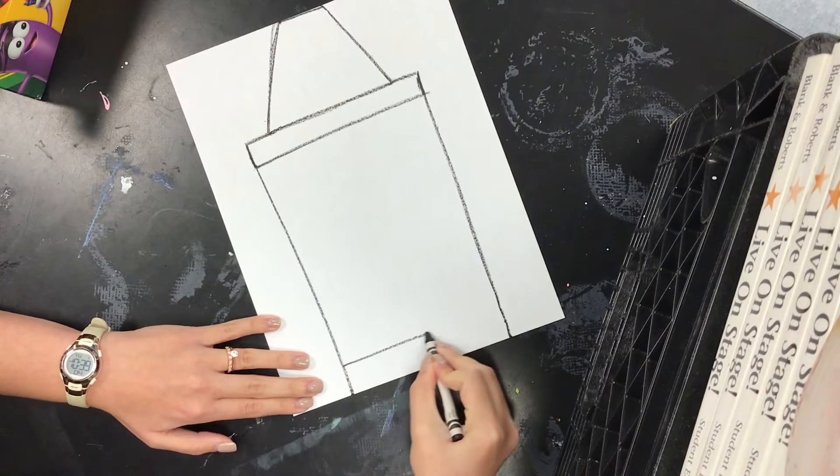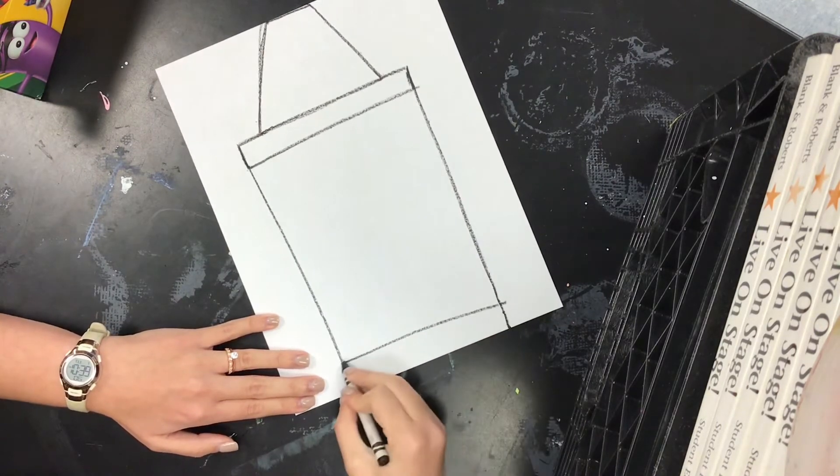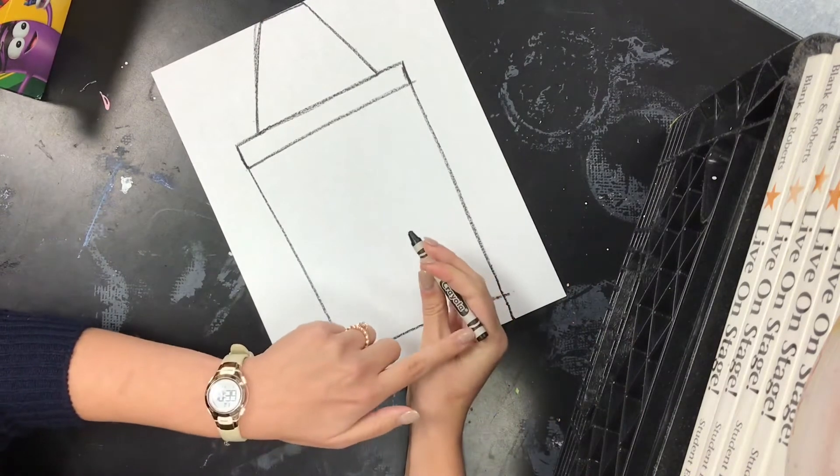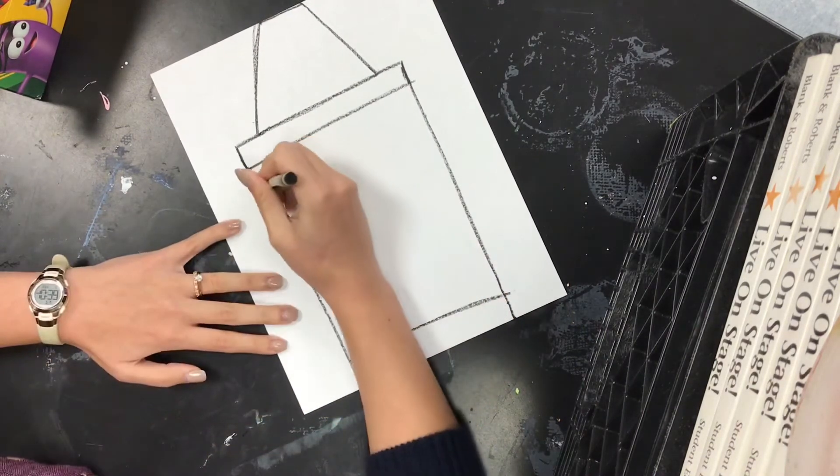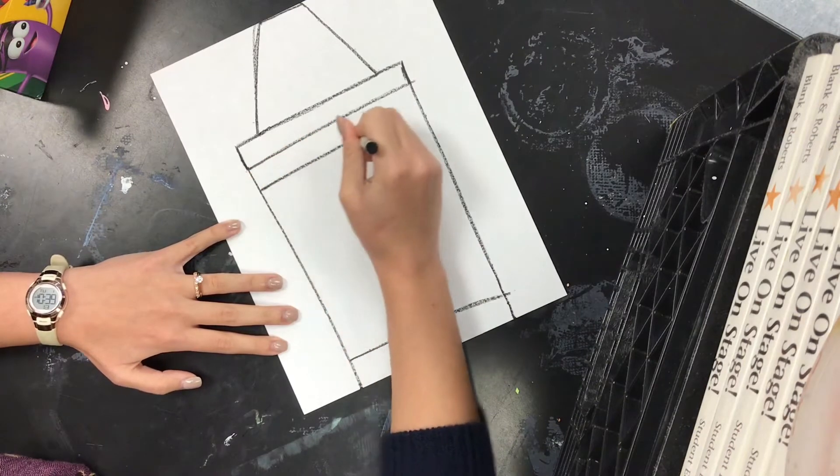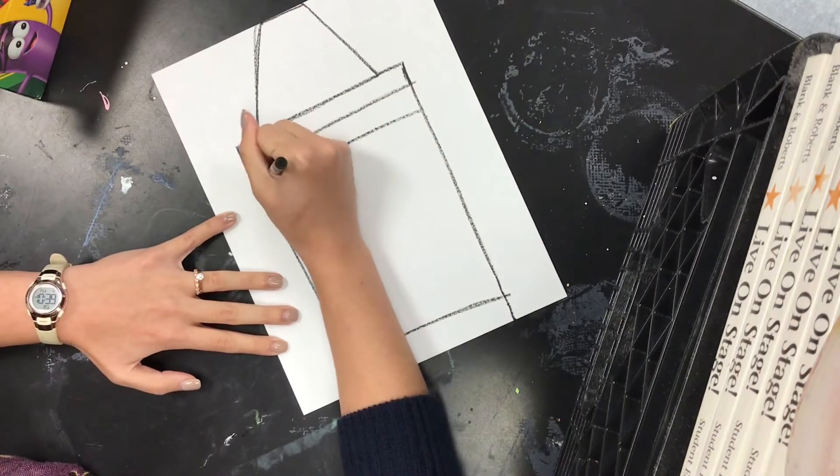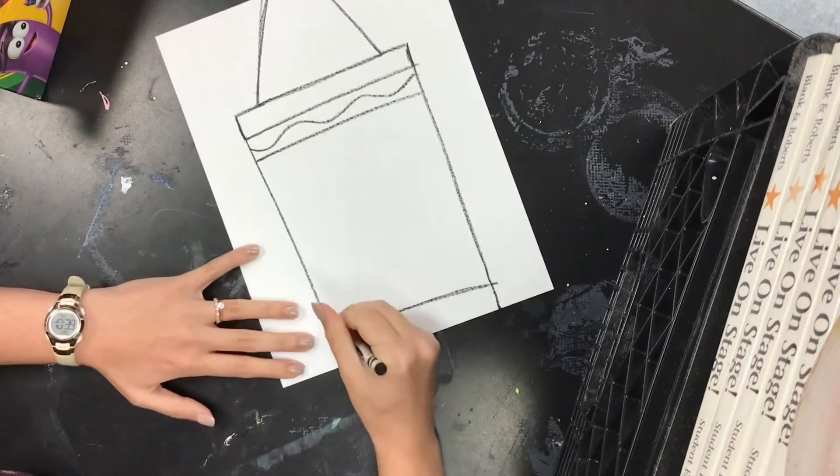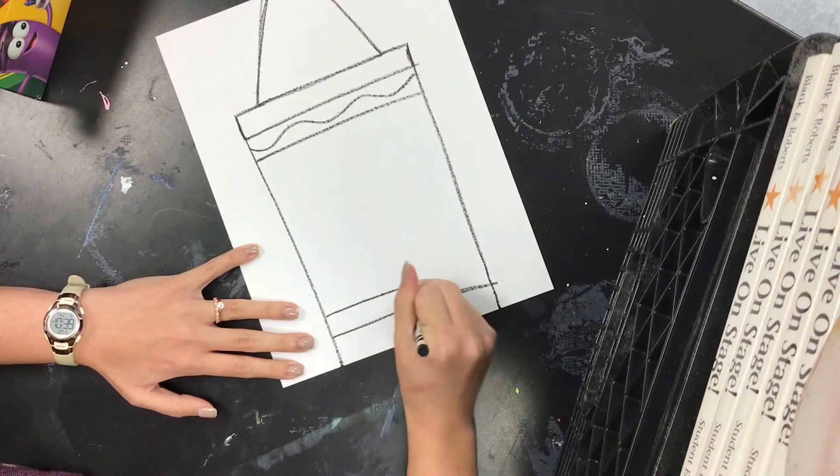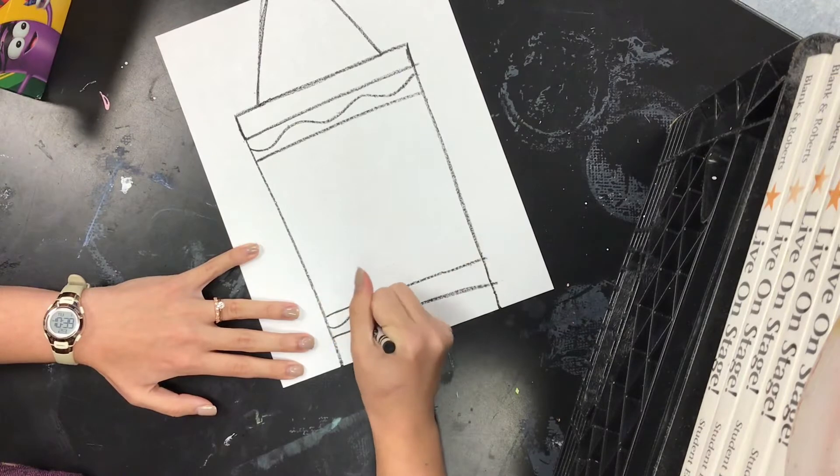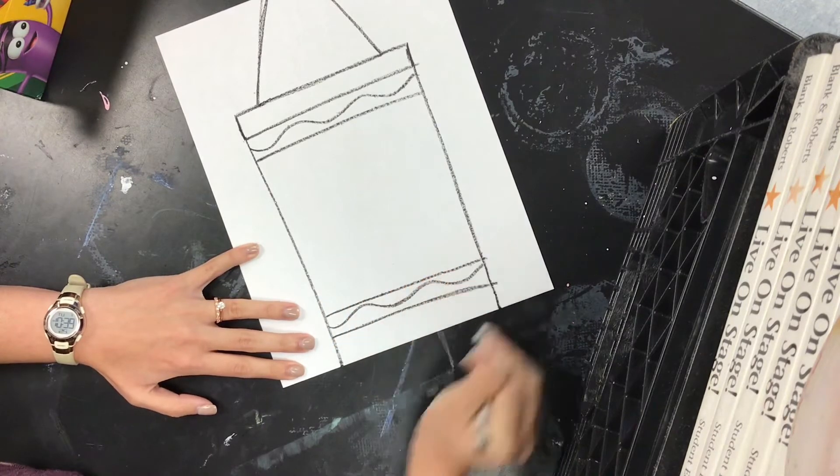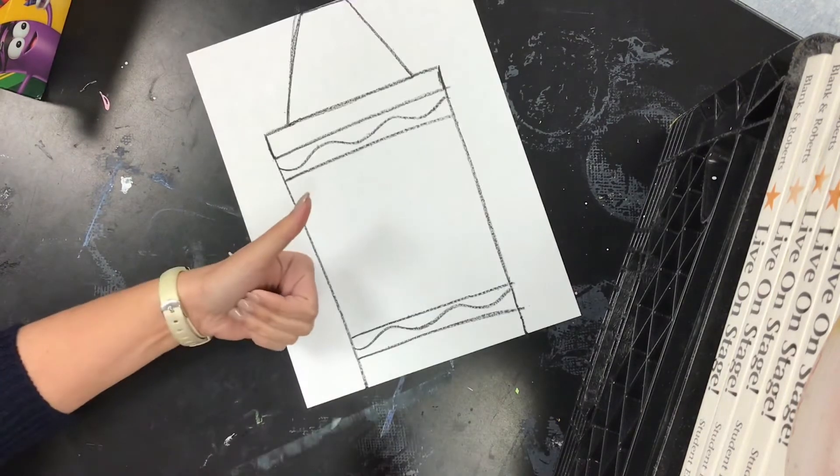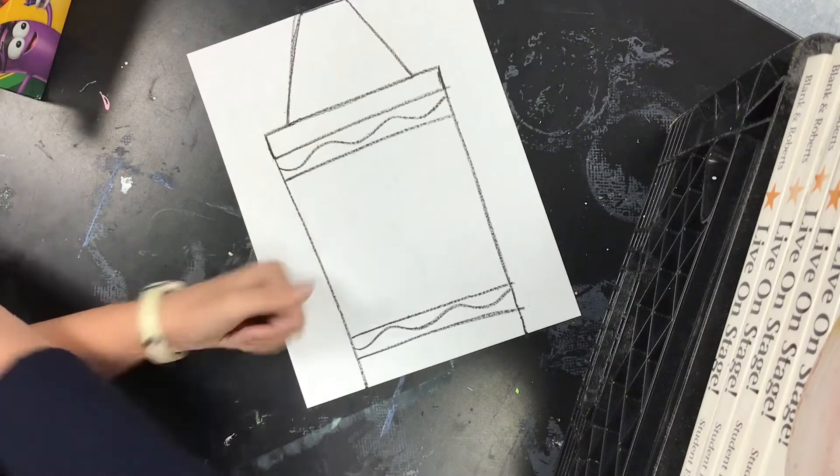Draw one line across the bottom, and now we're ready to add that little curvy design that is on our crayons. Go to the top, draw a line, and in that shape we make, you're going to draw a wavy line. We're going to do the same thing at the bottom. Now we have our drawing of our crayon.